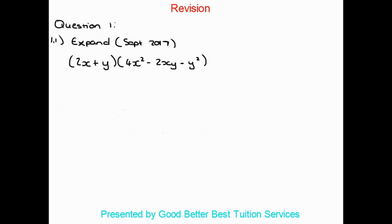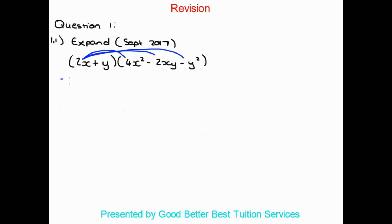Straight off, we're going to get straight into some algebra. We are asked here to expand — this is from the September 2017 paper. It says expand 2x plus y times 4x squared minus 2xy minus y squared. This is a binomial times a trinomial. The first term is going to multiply into each term in the trinomial, and then the same is going to happen with the y.